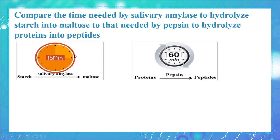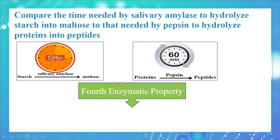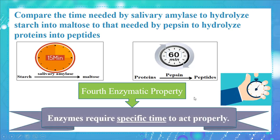The enzymatic activity is also controlled by time. Salivary amylase requires 15 minutes to hydrolyze starch into maltose, while pepsin requires 60 minutes to hydrolyze proteins into peptides. So the fourth enzymatic property is: enzymes require specific time to act properly.